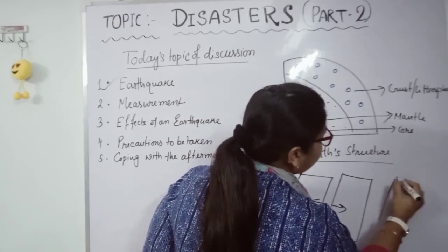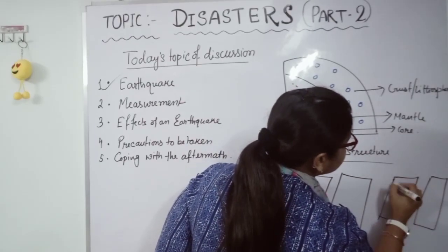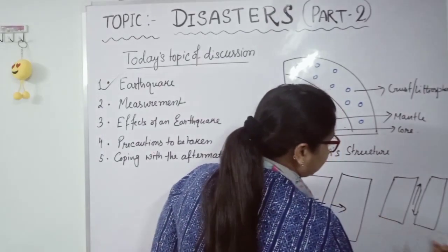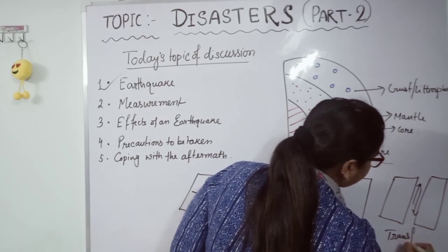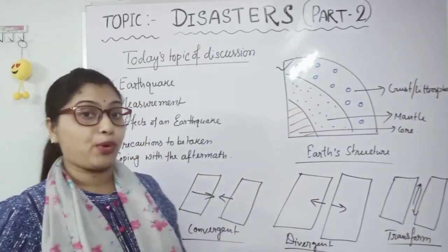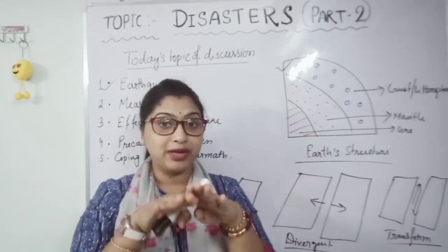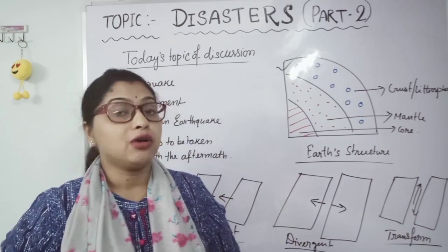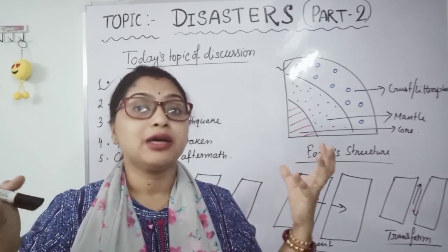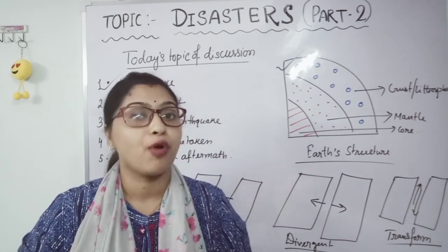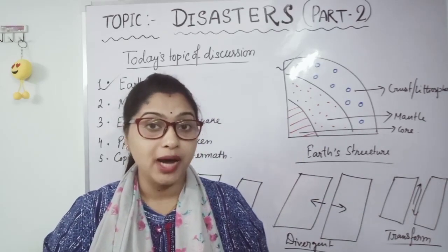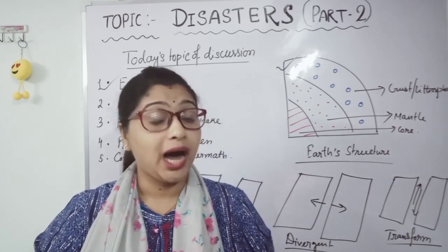Another boundary is formed when the plates slide against each other — they don't converge or diverge, they just slide. These are not destructive or constructive boundaries; they are known as transform boundaries. So this lithosphere layer is made of different plates that move towards the same direction, opposite direction, or slide. Sometimes when moving towards the same direction they collide, causing vibration and shaking felt on the Earth's surface — we call this an earthquake.